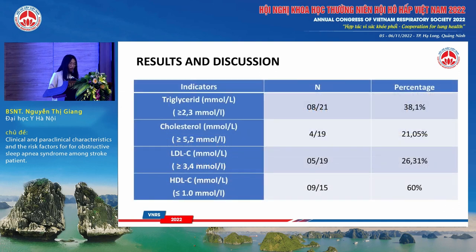Low HDL-C and elevated triglycerides were the most common lipoprotein disorder. The mechanism of dyslipidemia in patients with sleep apnea syndrome is due to chronic hypoxia during sleep, leading to disturbance in the synthesis of lipoprotein-producing enzymes in the liver.